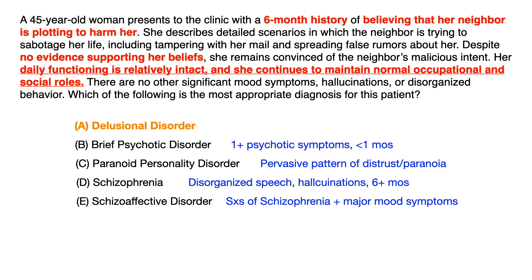Choice D, schizophrenia — the symptom timeline of six or more months is met, but this patient only has a delusion. We don't see hallucinations, disorganized behavior, or disorganized speech. Schizophrenia typically requires delusions plus hallucinations, disorganized speech, disorganized behavior, catatonic behavior, and negative symptoms — none of which are described in this question. So you can eliminate choice D.